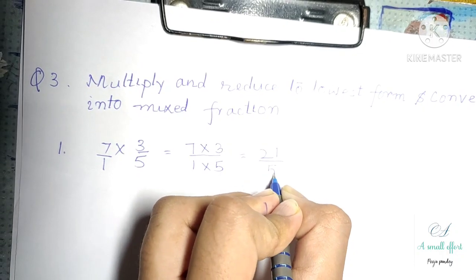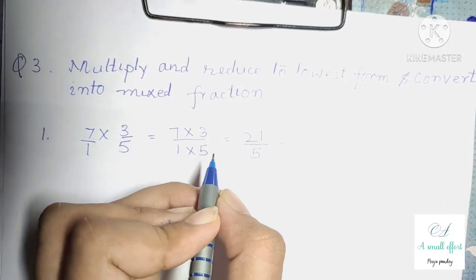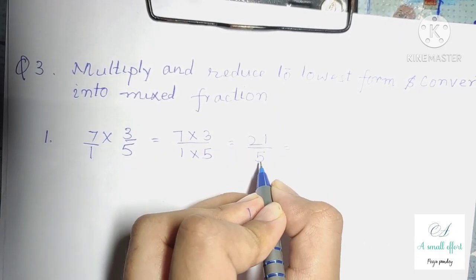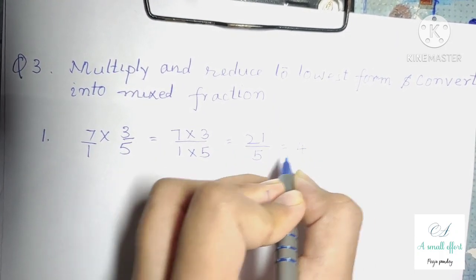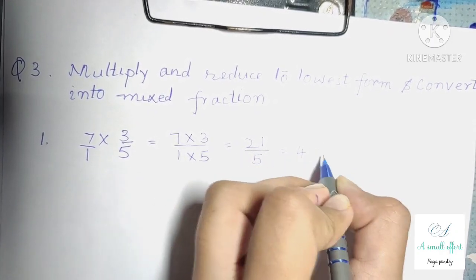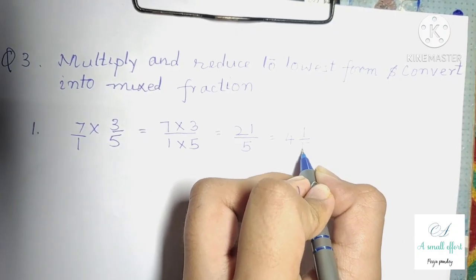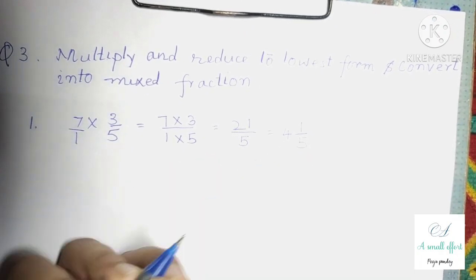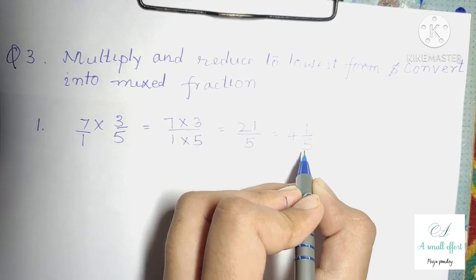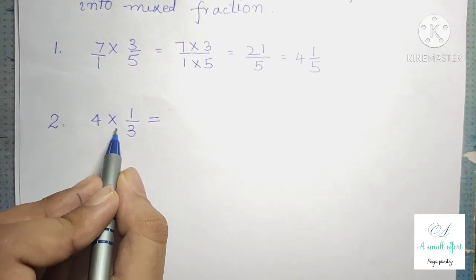Now we can convert it into mixed fraction. 5 fours are 20, so 21 minus 20 is 1, which goes in the numerator and 5 comes in the denominator. So our answer is 4 whole 1 by 5. Question number 3 part 2 is 4 into 1 by 3. We can write 4 as 4 by 1, and multiply numerator with numerator and denominator with denominator.